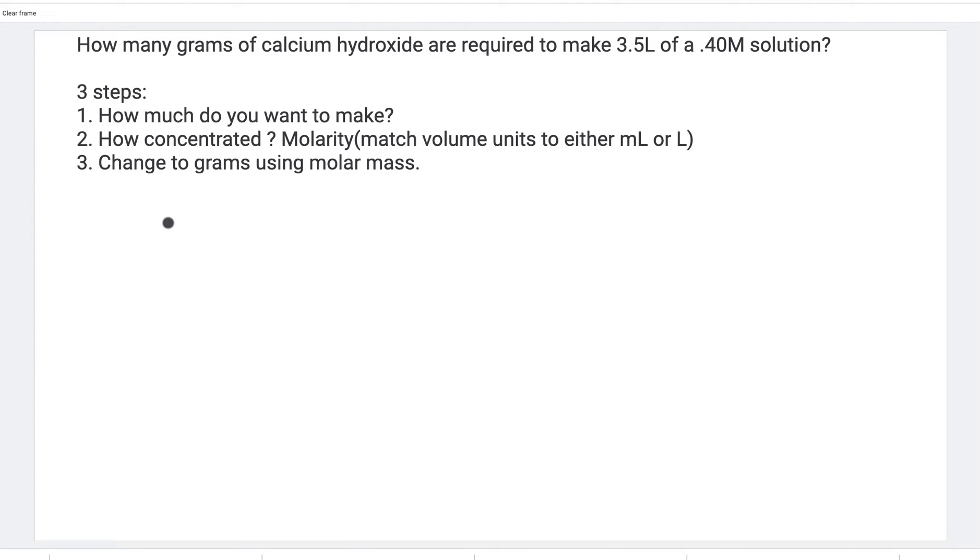How many grams of calcium hydroxide are required to make 3.5 liters of a 0.4 molar solution? Step one: how much do we want to make? 3.5 liters. We draw the picket fence.